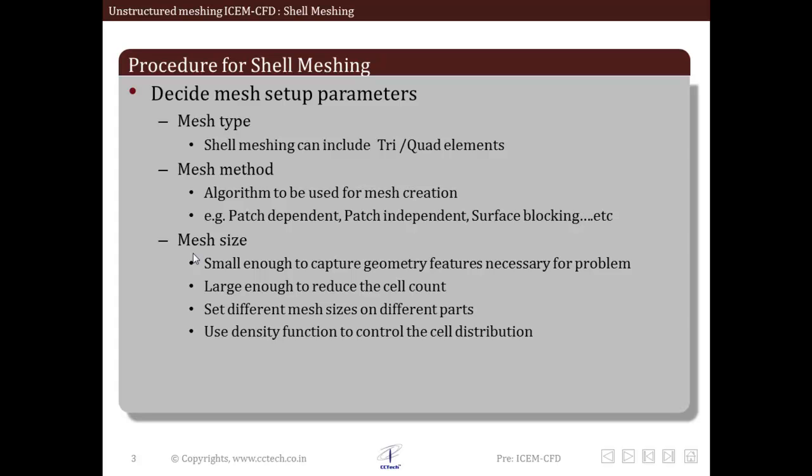We can set different mesh sizes on different parts. We can also use density functions to control cell distribution and the growth of the shell mesh. We can control how fine the mesh is in some regions and how it becomes coarse as it moves away from that region. We can also have different types and methods on different surfaces.